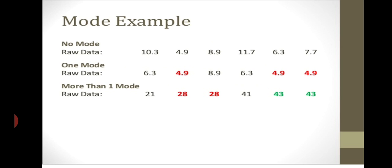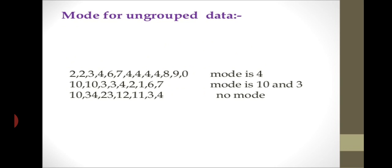For more than two modes: in the data 28, 28, 43, 43 — two values are repeated, so that is known as a bimodal value. If three values are repeated, then the data has a trimodal distribution. Let's now calculate the mode of grouped data.